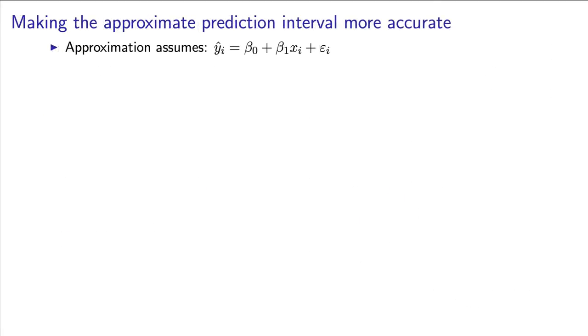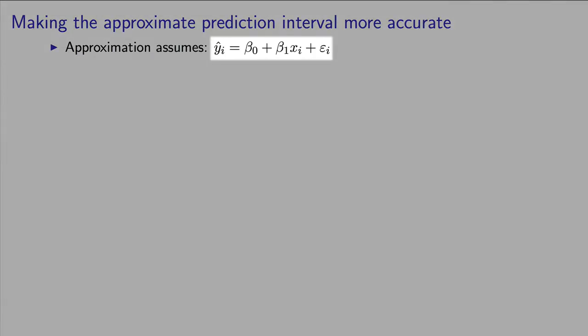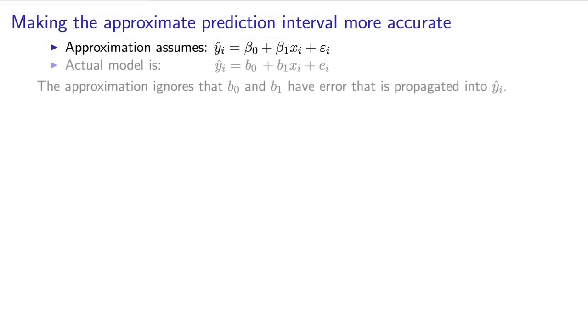However, that's not a true prediction error. The reason is because we do not know the true values of beta0 and beta1, as shown in this equation. Rather, we have estimated beta0 with b0 and estimated beta1 with b1. These estimates have error, and that error should propagate into the predicted value of y.